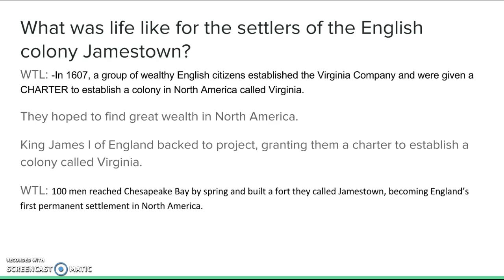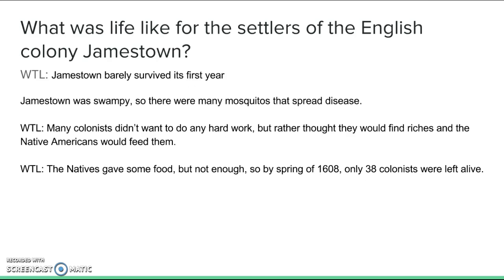The first colonists arrived in the spring of 1607 — about 100 men who sailed into what is now Chesapeake Bay and built a fort they named Jamestown, which would become England's first permanent settlement in North America. Jamestown did not do well in its first year. The land was very swampy, which is a breeding ground for mosquitoes. Mosquitoes carry diseases like malaria, and that ended up killing a lot of colonists.